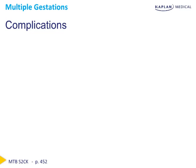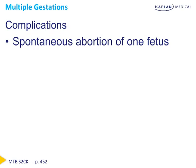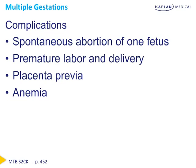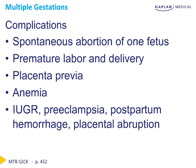There are a number of complications that can occur with multiple gestations. Spontaneous abortion can occur in one fetus while the other continues to live. Preterm delivery is much more common: singletons deliver at an average of 40 weeks, twins at 37 weeks, triplets at 33 weeks, and quadruplets at 29 weeks. Placenta previa is significantly more common, as is anemia given the increased iron demands of two fetuses. Other common complications include intrauterine growth restriction, preeclampsia (three times more likely with twins), postpartum hemorrhage, and placental abruption.